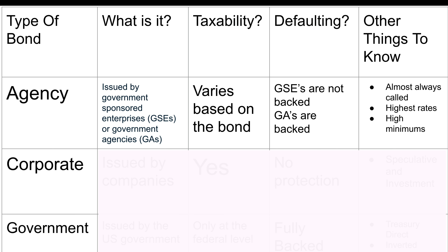GSEs — government-sponsored enterprise bonds — are not generally backed by the U.S. government. GAs, however, are fully backed by either the U.S. government directly or in other ways. It gets a little complicated, but just know that GSEs are not backed and GAs are backed.